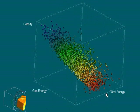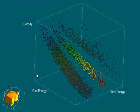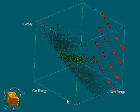Here, the user interacts with a scatter plot of data from the early universe simulation. Spatial dimensions plot density, gas, and total energy of star particles. Color coding denotes temperature.